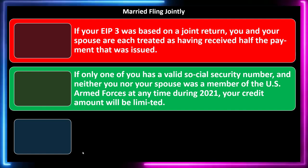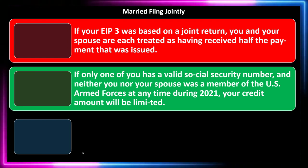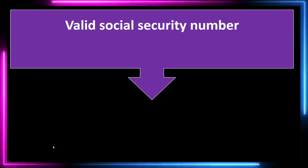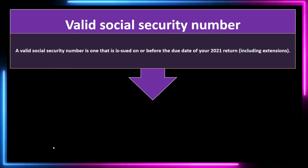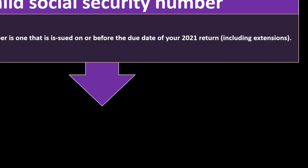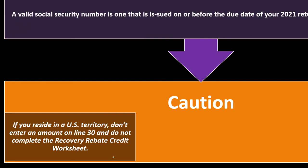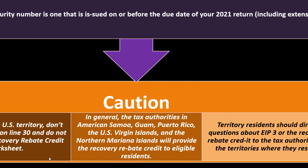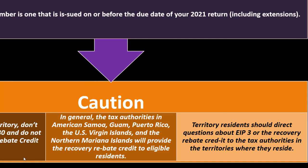If only one spouse has a valid social security number and neither was a member of the U.S. Armed Forces at any time during 2021, your credit amount will be limited. If applicable, include your spouse's EIP3 as shown on your spouse's Notice 1444-C on line 13. A valid social security number is one issued on or before the due date of your 2021 return, including extensions. Caution: if you reside in a U.S. territory such as American Samoa, Guam, Puerto Rico, U.S. Virgin Islands, or the Northern Mariana Islands, do not enter an amount on line 30 and do not complete the recovery rebate credit worksheet — the tax authorities in those territories will provide the recovery rebate credit to eligible residents.